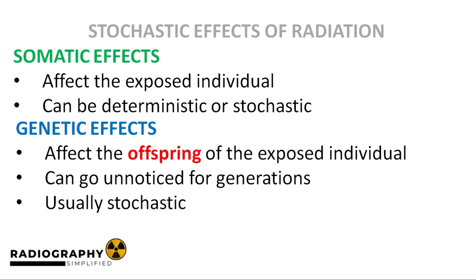Before we go on to highlight stochastic effects of radiation, let's talk about another method of classifying radiation effects. Radiation effects that affect the individual that was exposed are called somatic effects. A somatic effect can be deterministic or stochastic. On the other hand, genetic effects affect the offspring of the individuals exposed to radiation. Genetic effects occur because radiation can cause mutations to the genes of a person. These mutations may go unnoticed for many generations before they eventually pop up. Genetic effects are stochastic.